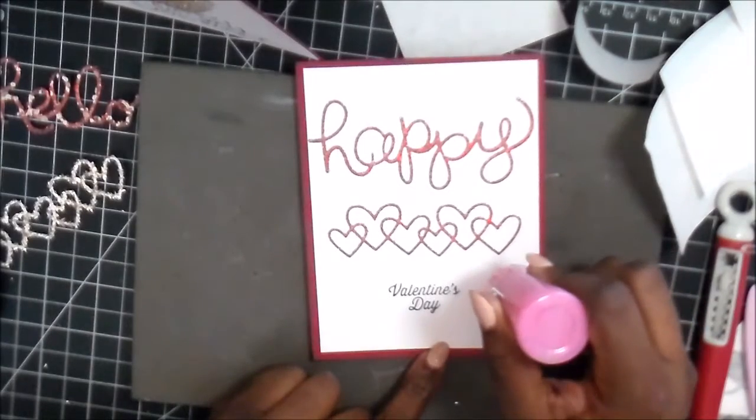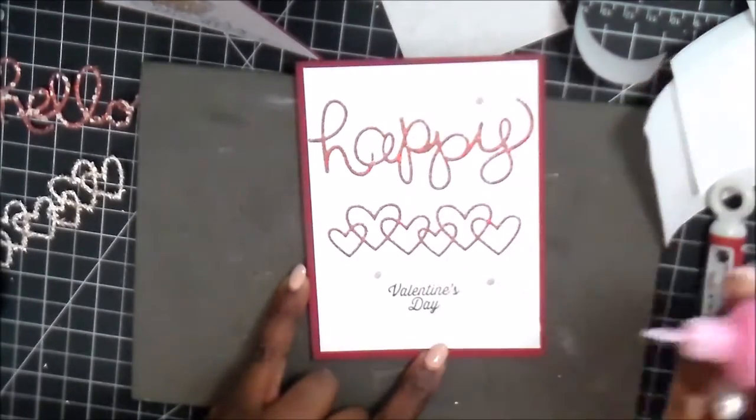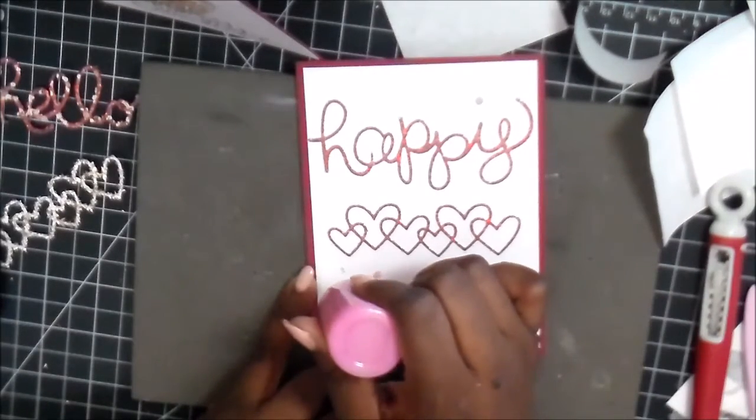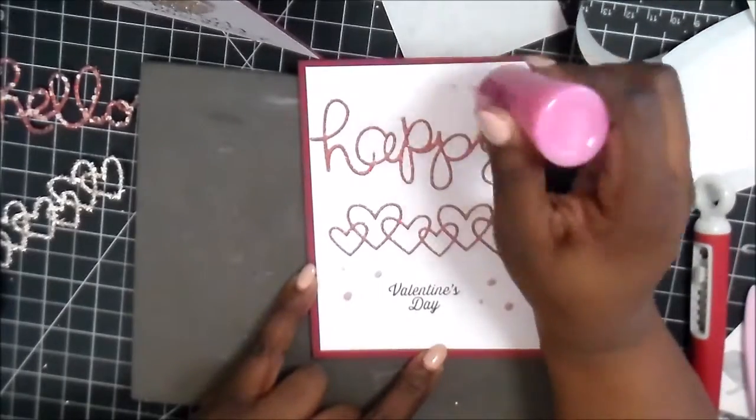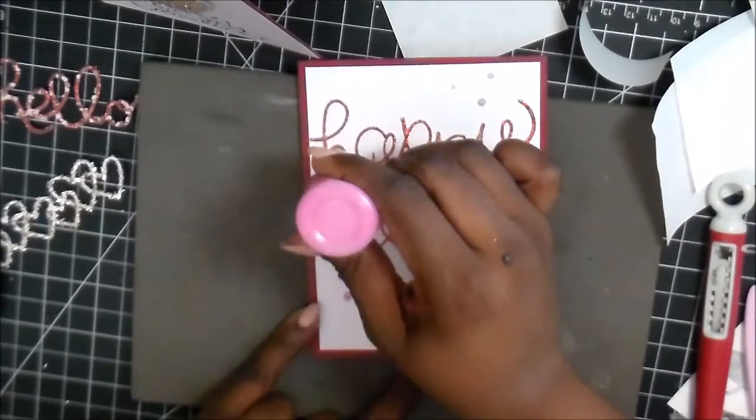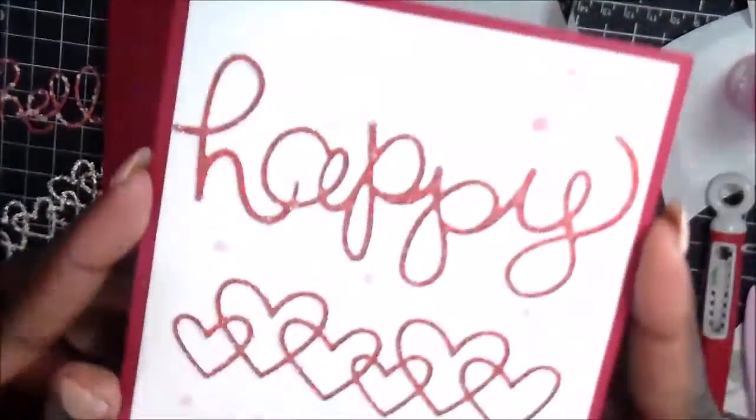And then we're taking the Nuvo—this is the glitter drops and this one is Sherbet Summer—and we're just putting down some droplets. I try to put them down in different sizes, some a little bit bigger. I find with the Nuvos you've got to just keep using them and eventually you'll get your favorite method of getting them on.